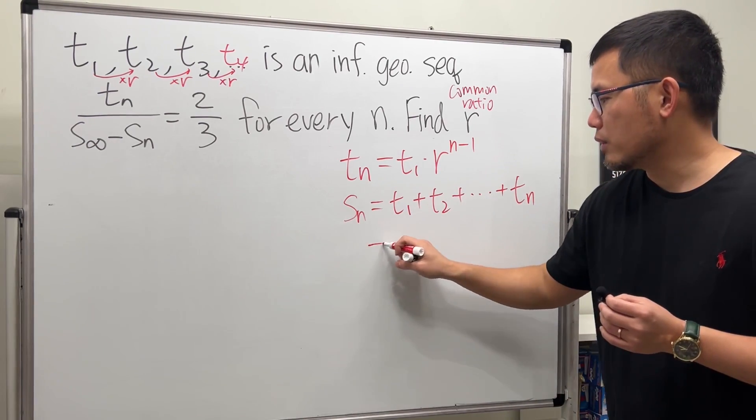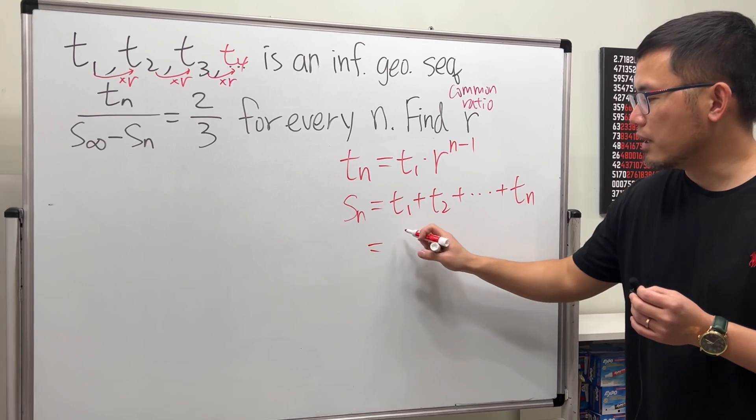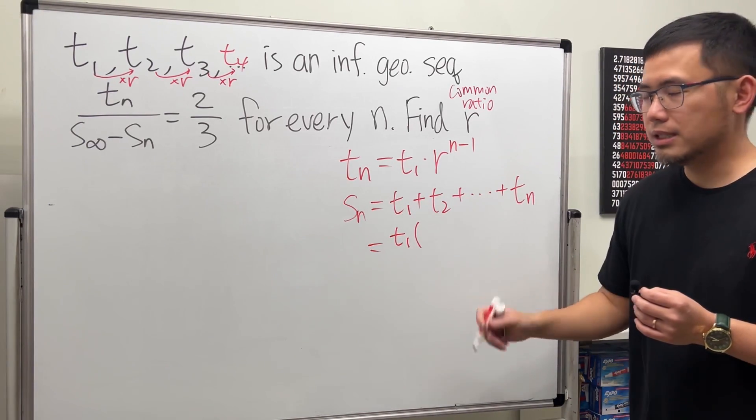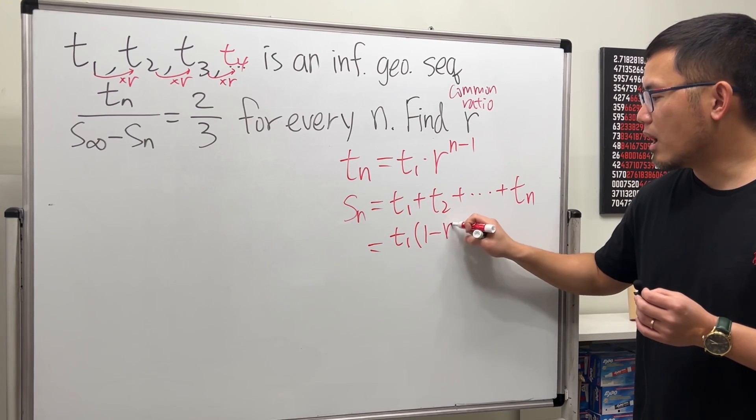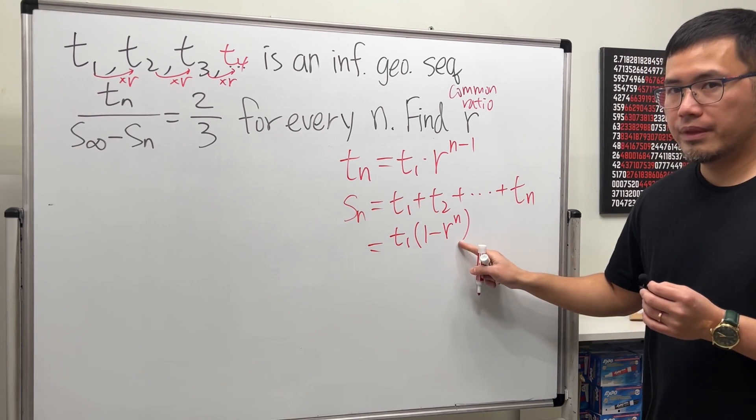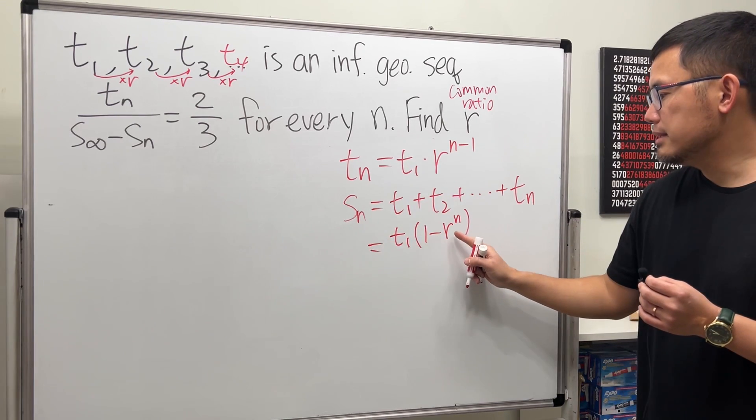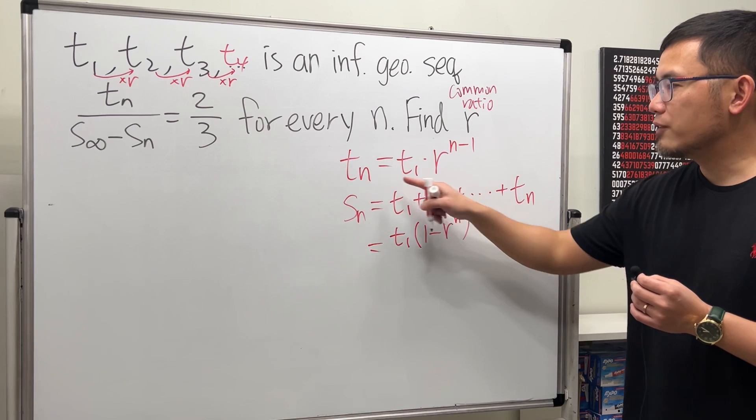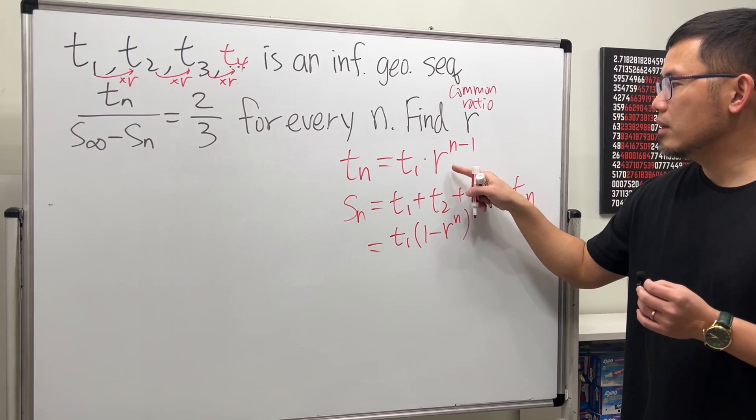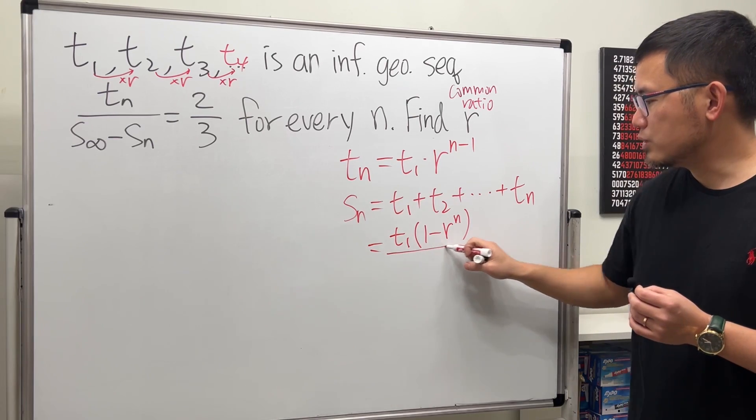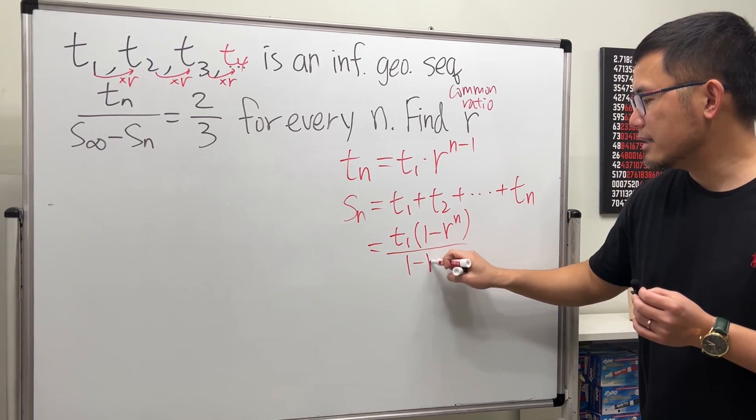And we have a formula for that as well. This right here will give us, you start with t1, and you are going to multiply this by 1 minus r raised to the nth power. Keep in mind, though, for the sn formula, this is r to the nth power. But for the tn formula, you get r to the n minus 1.